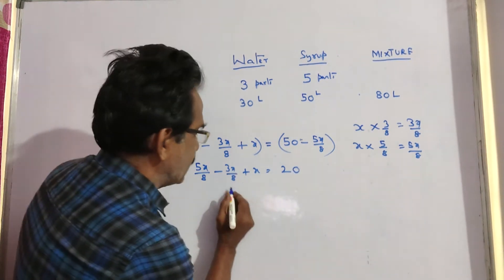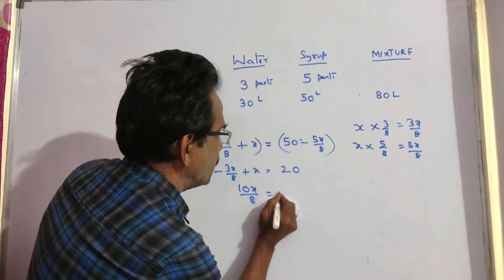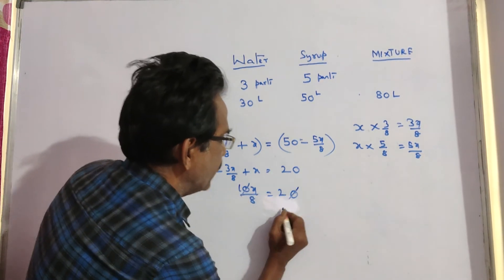5x minus 3x, 2x, 8x, 10x. 10x by 8 is equal to 20. 0 gets cancelled.